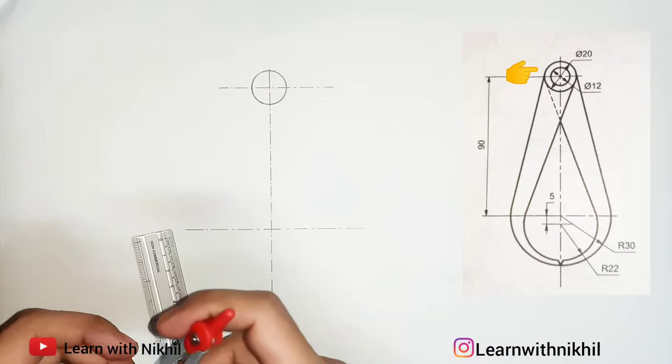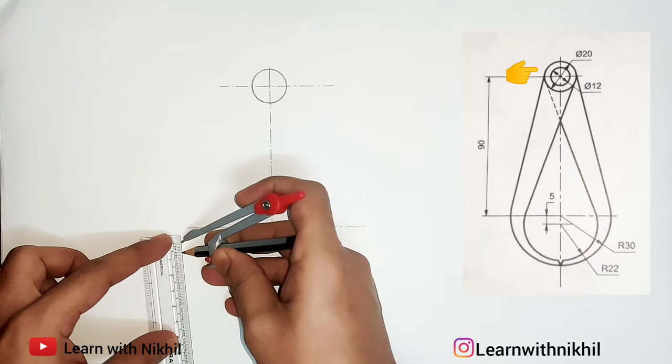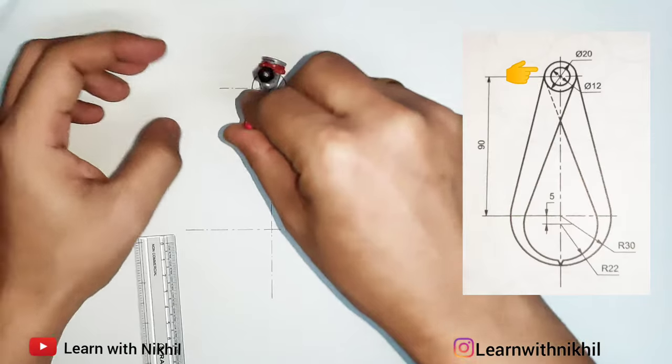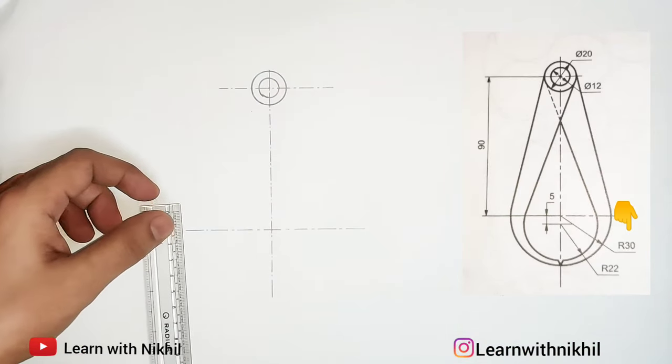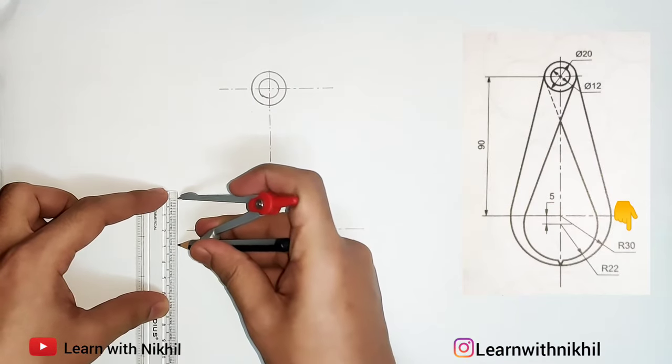Now next, with diameter given is 12, so on compass I'll take radius of 6 millimeter. We'll draw the circle. Now at the bottom we have two semicircles, one with the radius of 30.